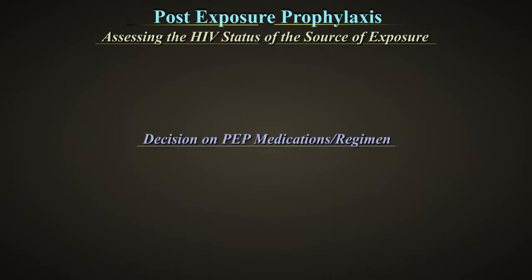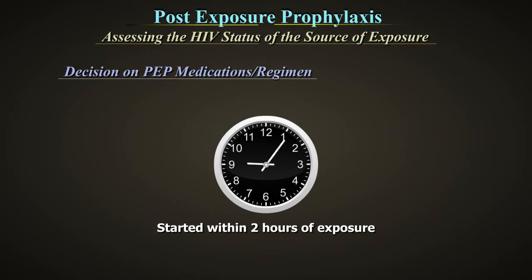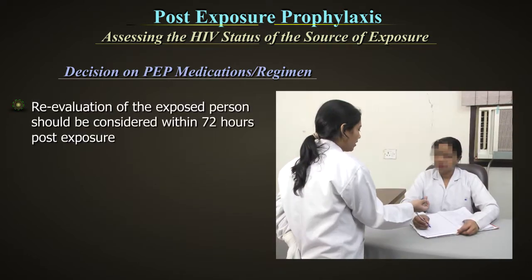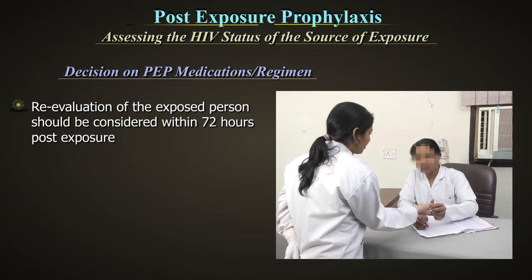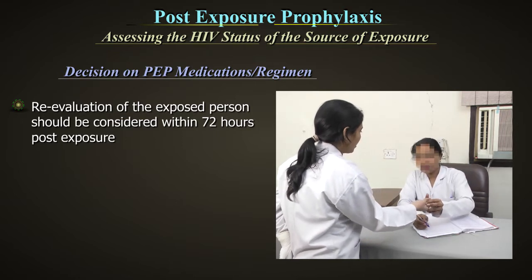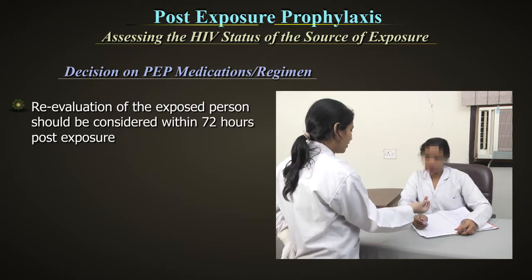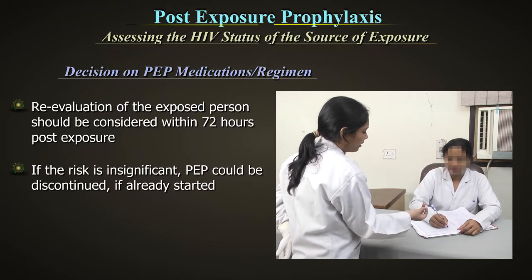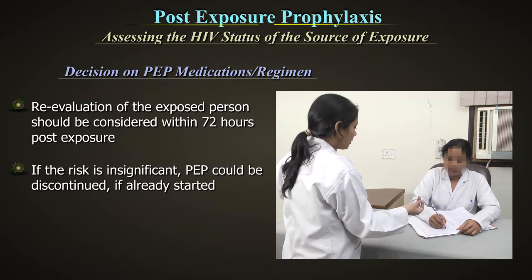Decision on PEP medications or regimen: because PEP has its greatest effect if started within 2 hours of exposure, it is essential to act immediately. Ideally, therapy should be started within 2 hours and definitely within 72 hours of exposure. Never delay starting therapy due to uncertainty. Re-evaluation of the exposed person should be considered within 72 hours post-exposure, especially if additional information becomes available. If the risk is insignificant, PEP could be discontinued if already started.